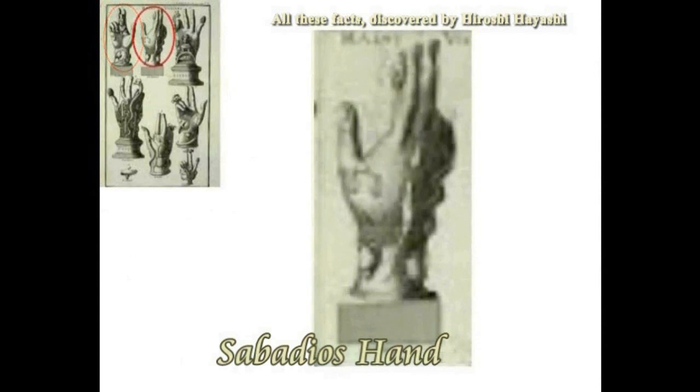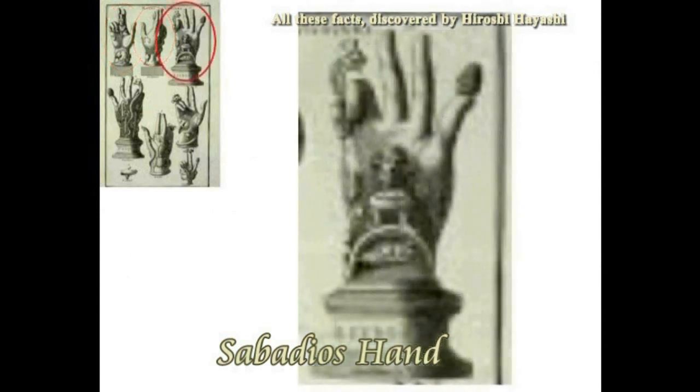フリジアンのサバジオスをサバジオスと表し、ゼウスというのはそこから来ています。馬にまたがった牧神の神です。サバジオスの手の基本形は一つ、薬指と小指を曲げ残りの3本を立てています。そして指には蛇が絡んでいます。蛇とサバジオスは密接な関係にあるということになります。